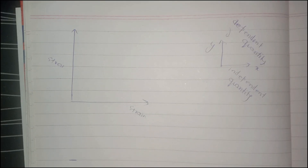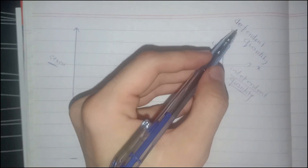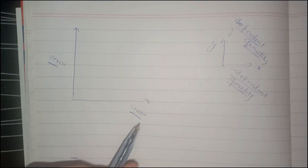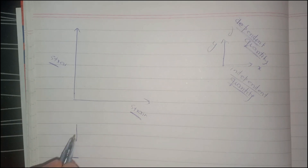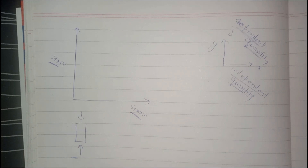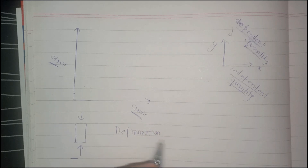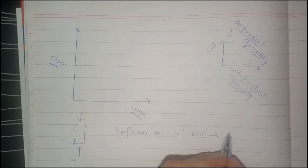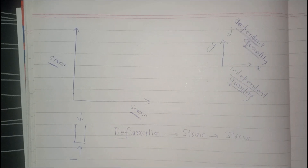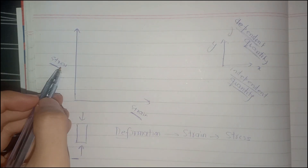You might wonder why strain is on the x-axis and stress is on the y-axis. The x-axis holds the independent quantity and the y-axis holds the dependent quantity. If you apply a compression load to a circular cylinder, it will have some deformation, which results in strain, and this strain consequently results in stress produced in the body. So strain is the independent variable — if there are strains in the body, there will be stress. It cannot be the other way around.